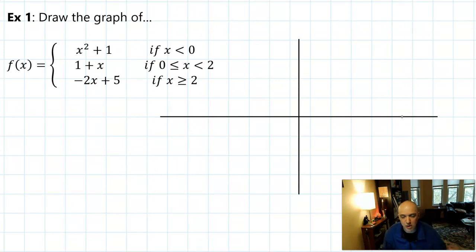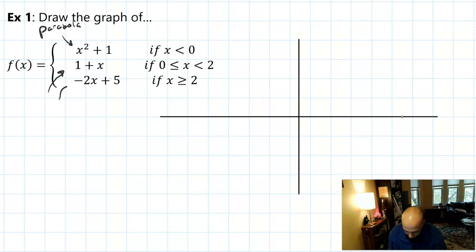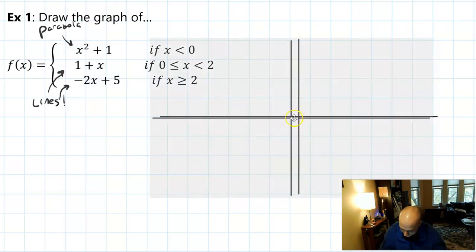Let's look at another example. This is one where we're going to draw the graph given the functions. I noticed that there are three parts, so I'm going to have three segments on the graph. It can help before you start graphing to look at each piece and decide just what the graph will look like. So I know that this is going to be a parabola, and both of these look like lines. So I'm expecting my final product to have one parabola segment and two line segments.